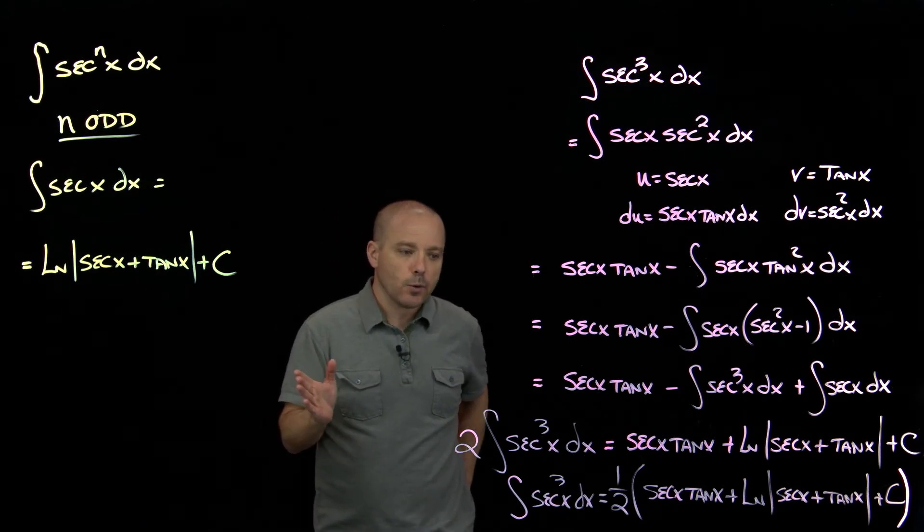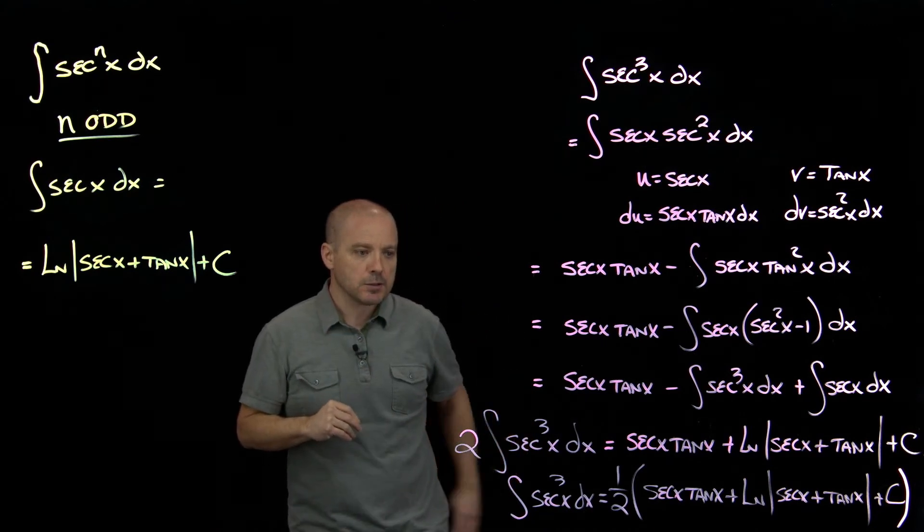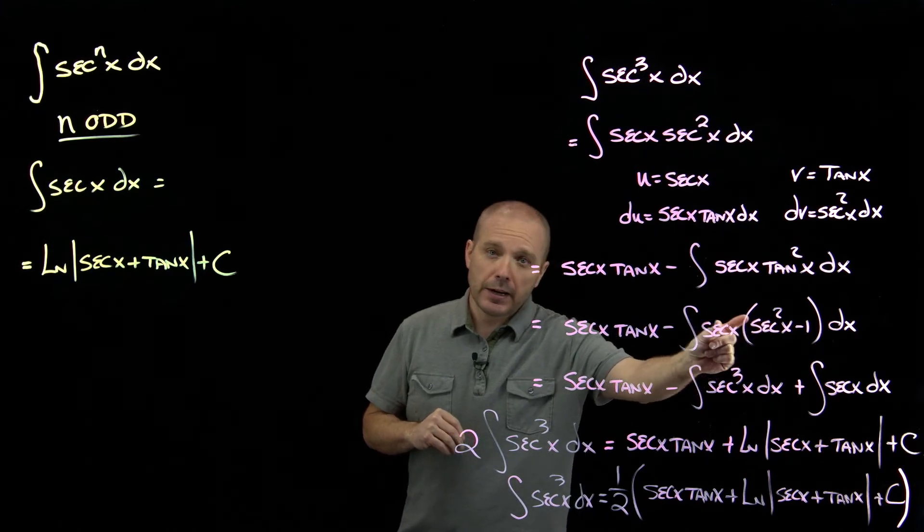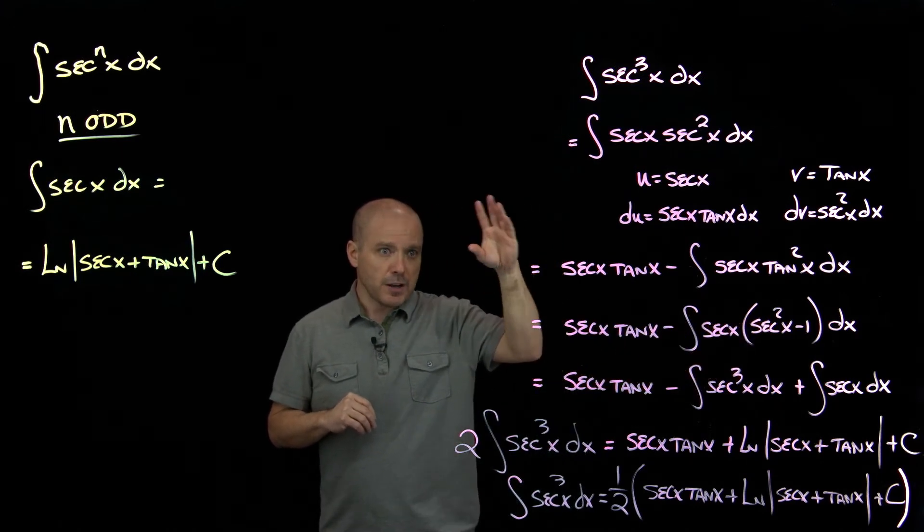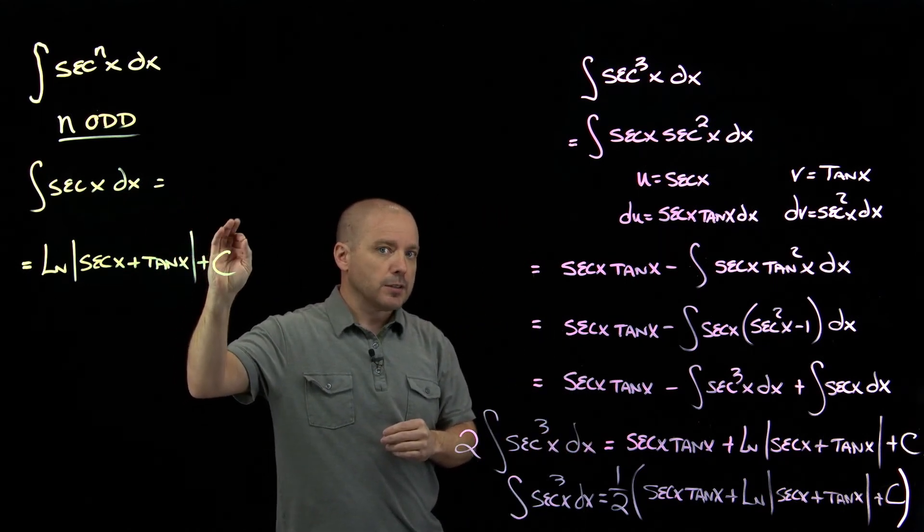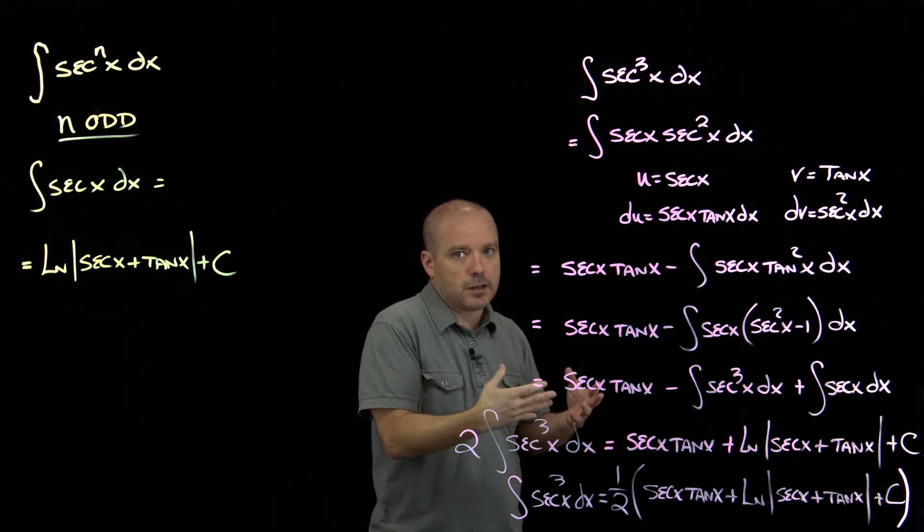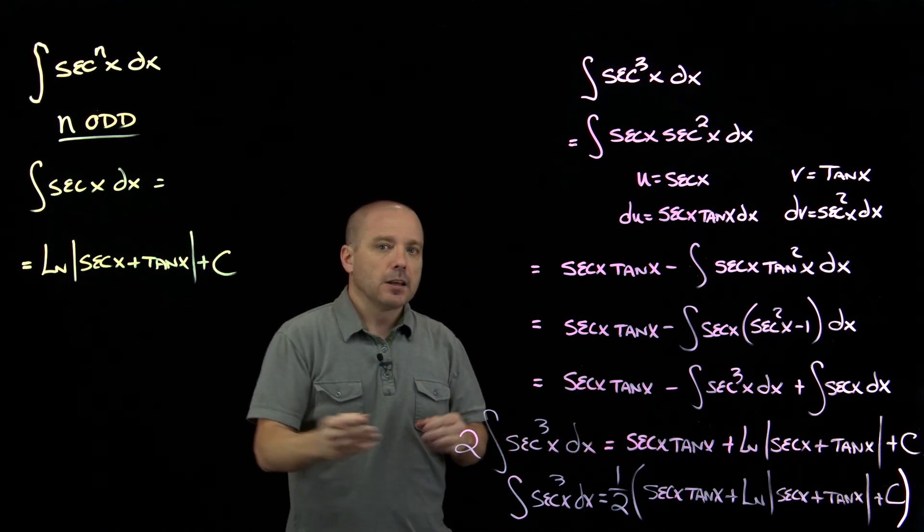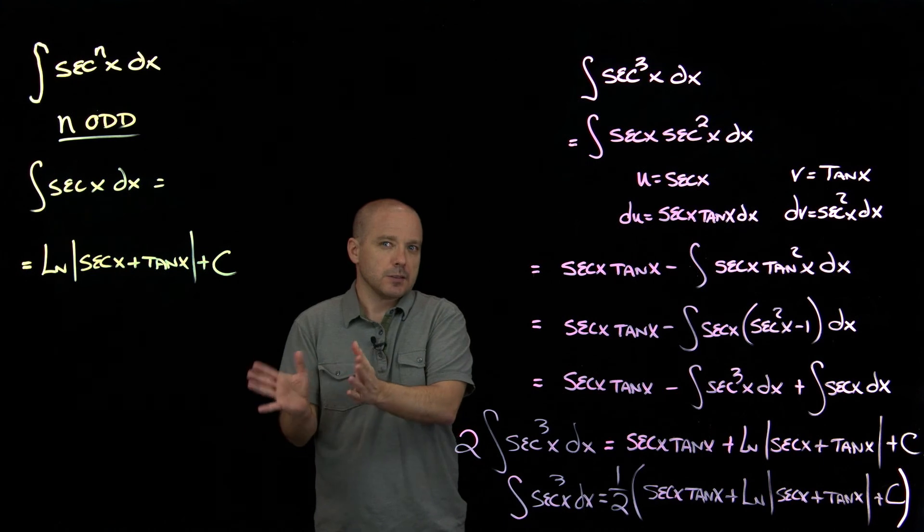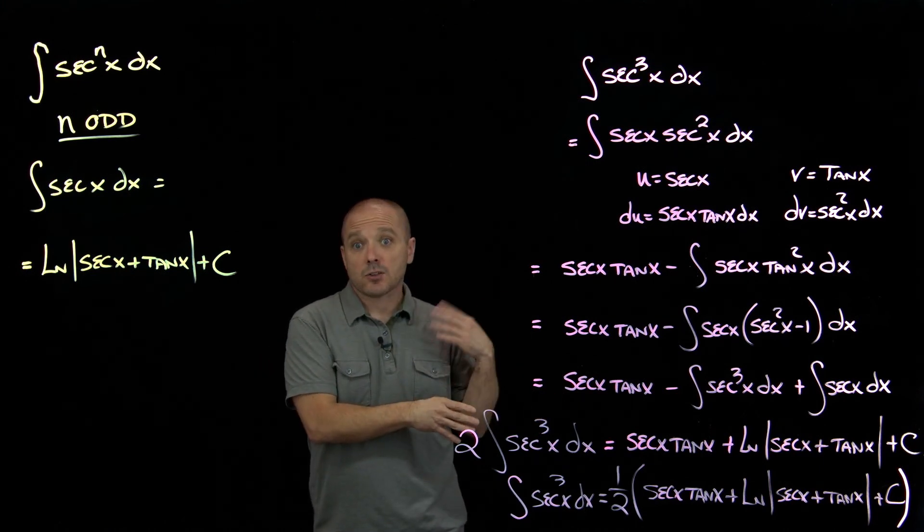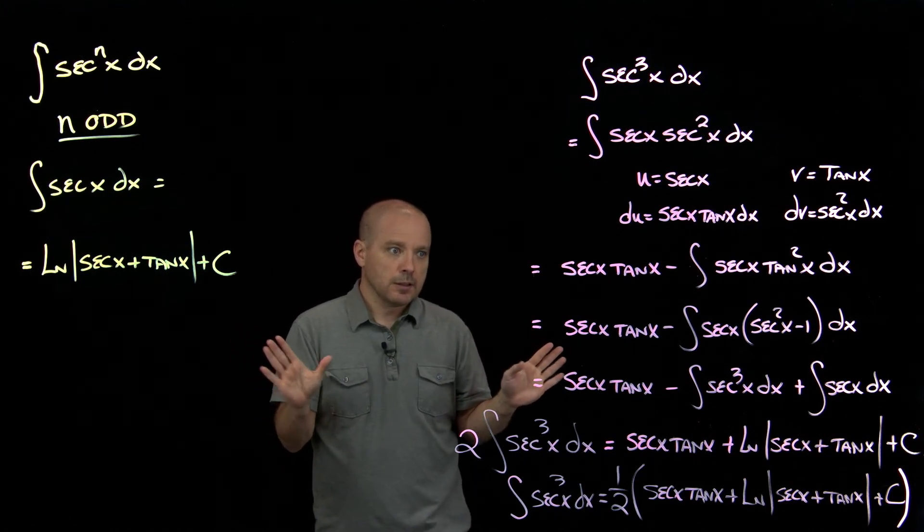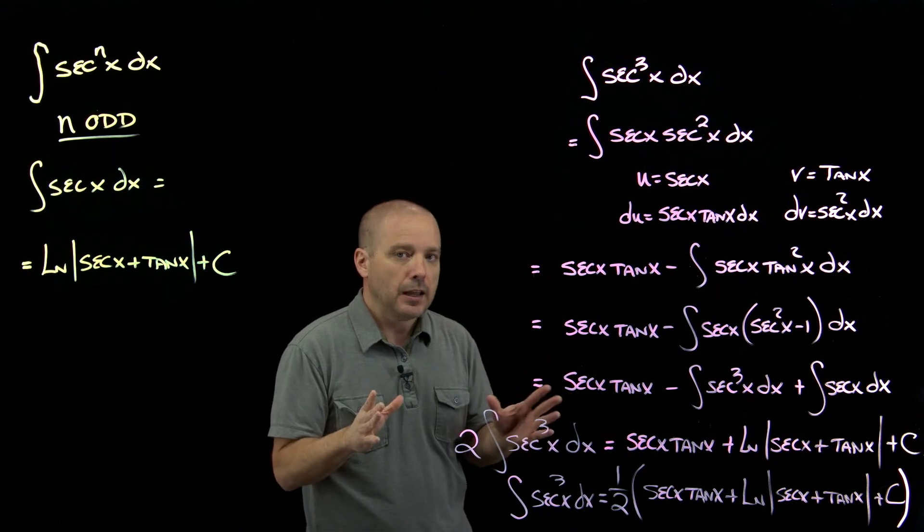Now we've kind of steered away from cosecant and cotangent here. What about those? Well, because of the relationship between the Pythagorean identities, this process is the same for the co-functions. So we know how to do even powers of secant, so even powers of cosecant work the same way. Odd powers of secant work the same as odd powers of cosecant. And same thing with tangent and cotangent. We learned the process for degrees of tangent. The degrees of cotangent work the same way. So actually we've covered all the trig functions. Powers of all the trig functions have antiderivatives.